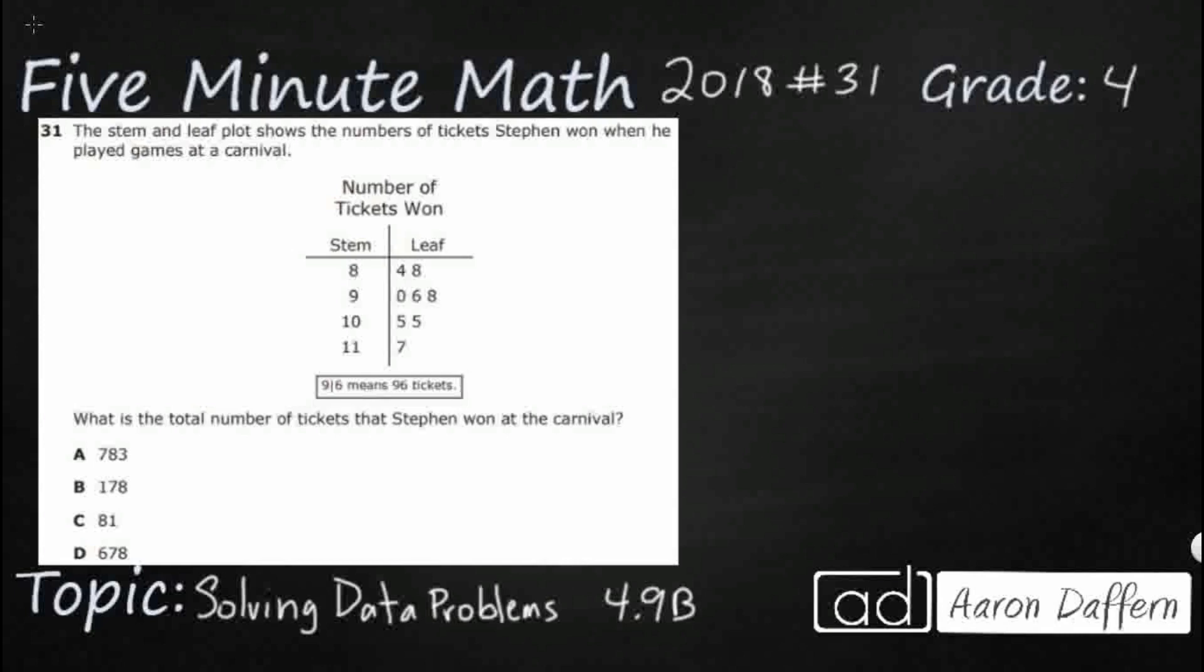So we have a stem and leaf plot here. It shows the number of tickets that Stephen won when he played games at a carnival. Always we start down here with our key. So a 9 slash 6 means 96, which means our stem is going to be our tens place. Our leaf is going to be our ones place.